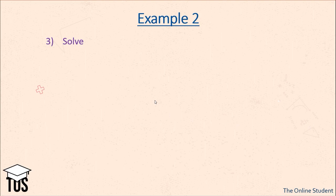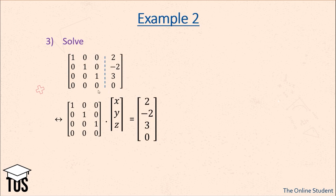Now all we have to do is solve the equations. These elements are the coefficients of our variables. For the first row: 1·x + 0·y + 0·z = 2, so x = 2. For the second row: 0·x + 1·y + 0·z = -2, so y = -2. Same for the third row. We finally have the solution to our second example.